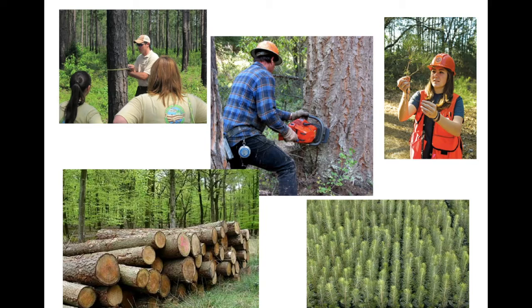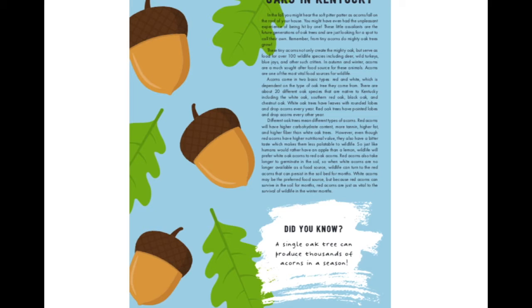Think about our school — our school is named Lone Oak Elementary School, and this year the theme is exploring Kentucky's Mighty Oaks. I thought this would be a good way to tie our school connection to a poster contest. We have little acorns. If you want to draw acorns or oak leaves, this would be an excellent idea for this contest.